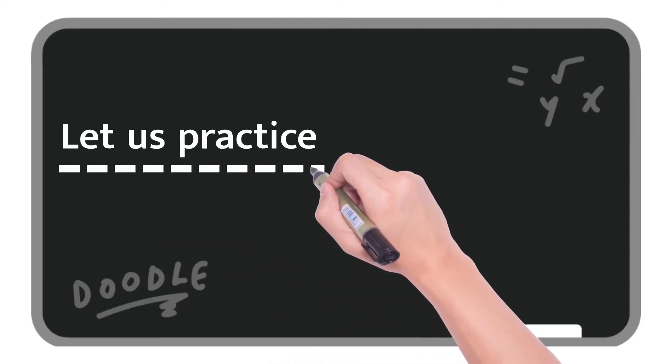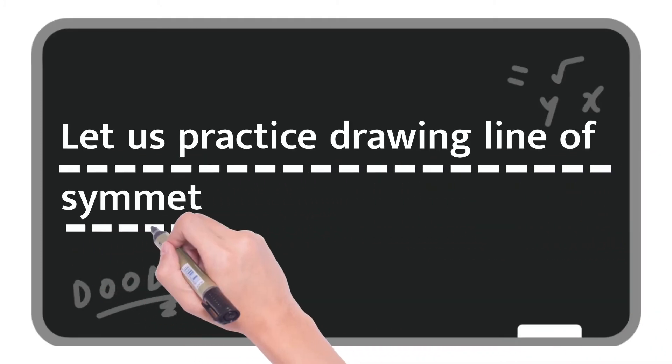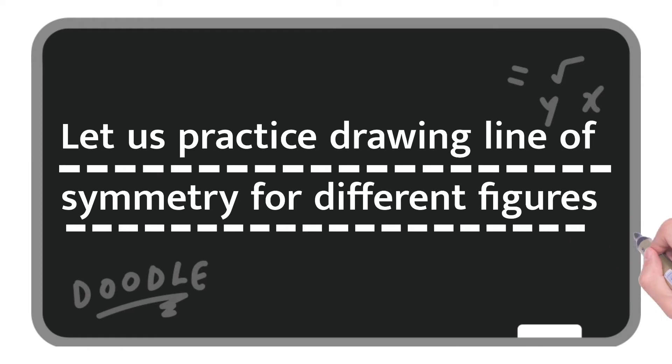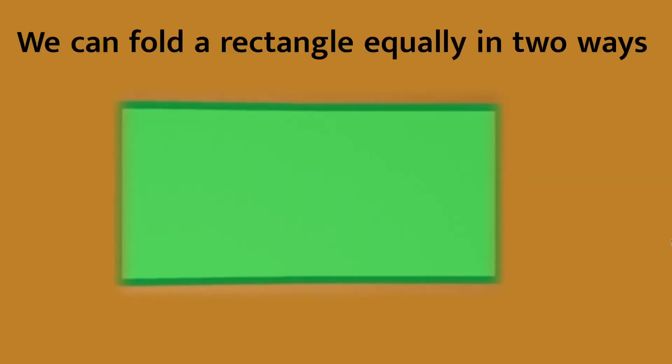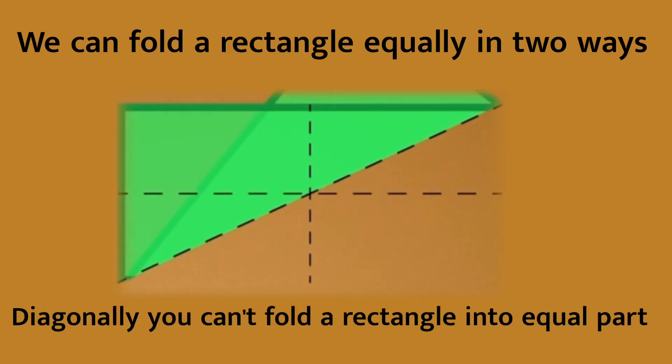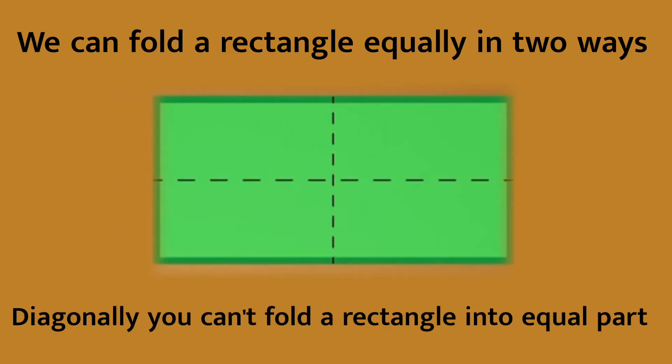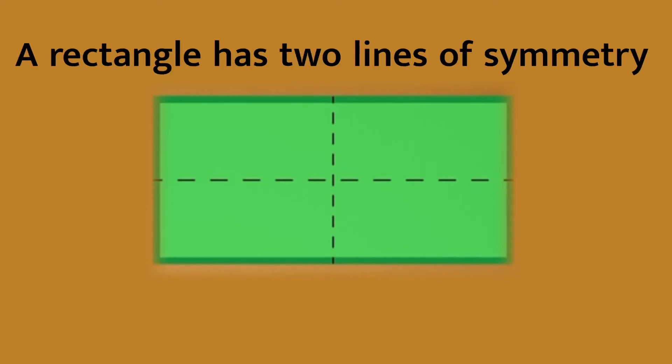Let us practice drawing line of symmetry for different figures. We can fold a rectangle equally in two ways. Diagonally you can't fold a rectangle into equal parts. A rectangle has two lines of symmetry.